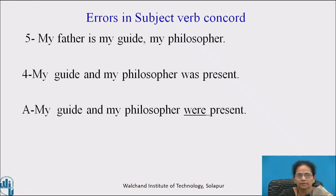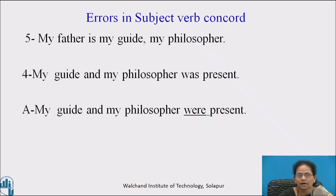See the next example: 'My father is my guide, my philosopher.' Though 'guide' and 'philosopher' are two nouns, they indicate one idea. That's why the verb remains singular: 'My father is my guide, my philosopher.' Now see the next example: 'My guide and my philosopher was present.' In this sentence, guide and philosopher are two different persons — two different subjects, so plural subject requires plural verb. The correct form is: 'My guide and my philosopher were present.'